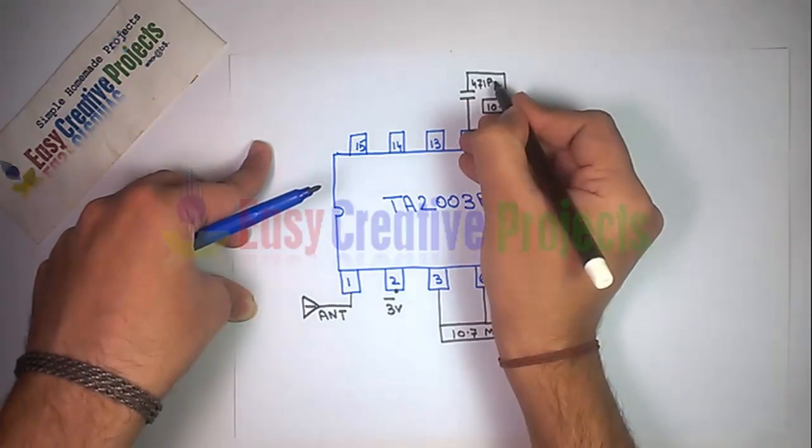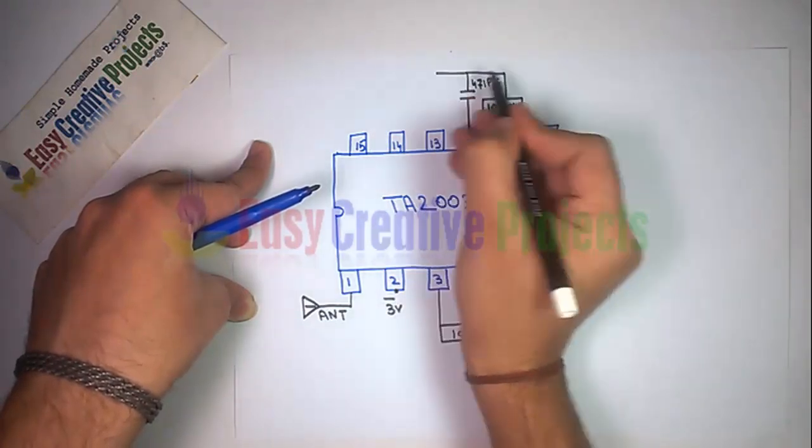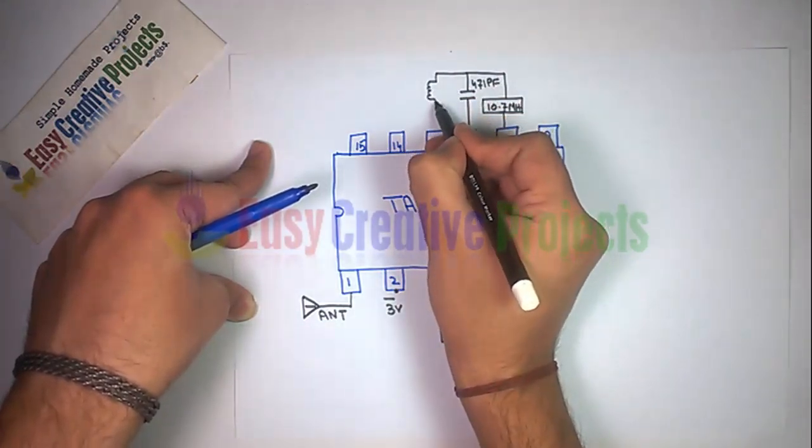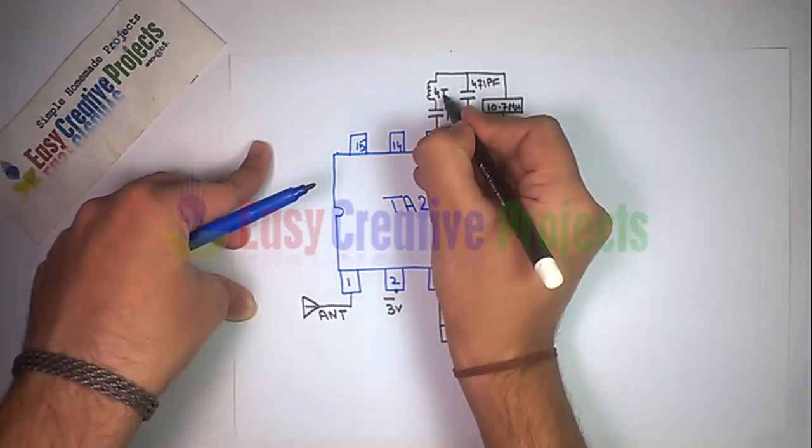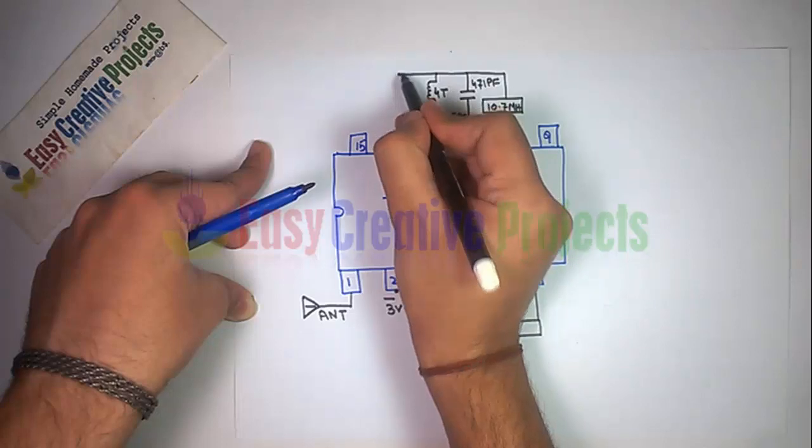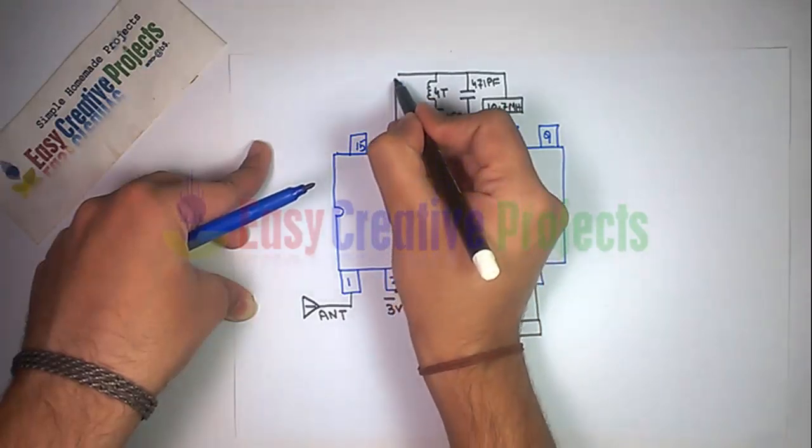Now connect 4-turn coil and 15pF capacitor with pin 13. Now connect pin 14 with positive power.